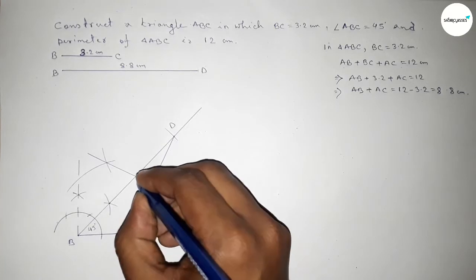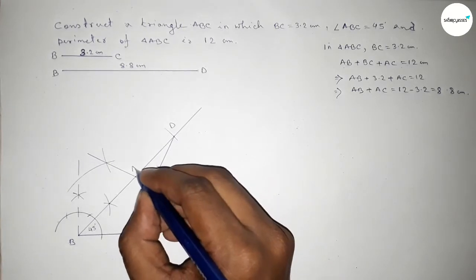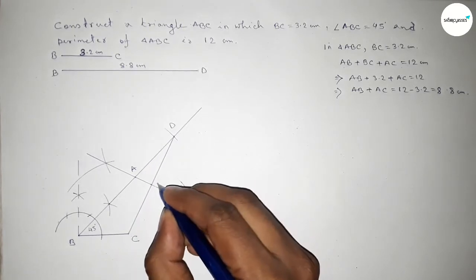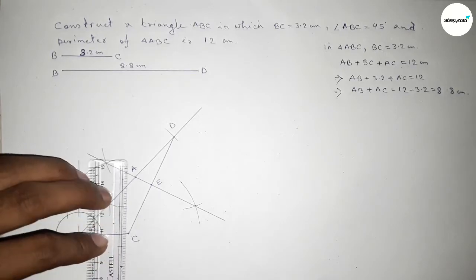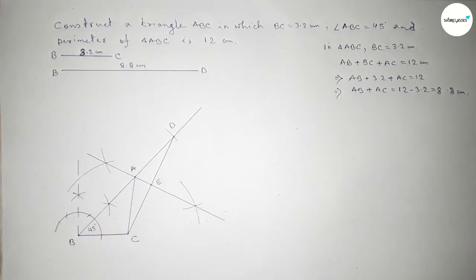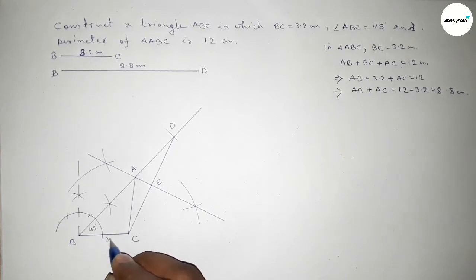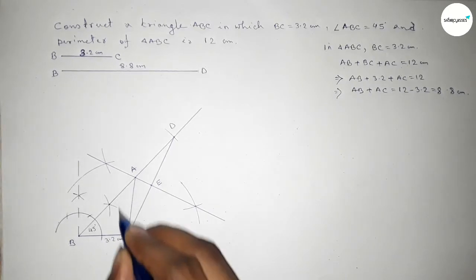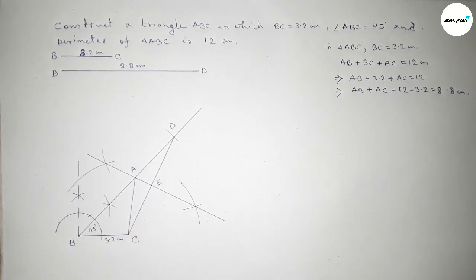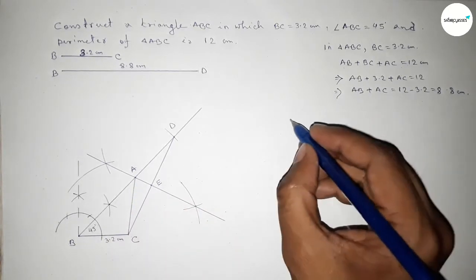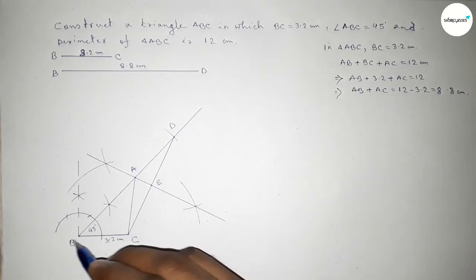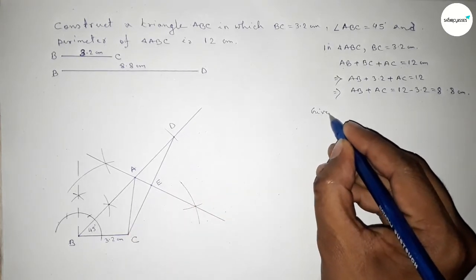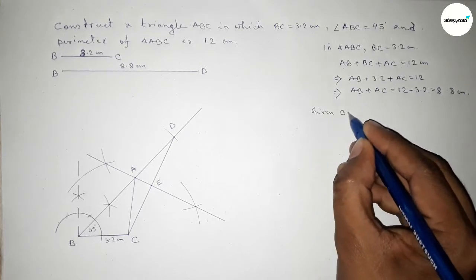The perpendicular bisector intersects at two points. Taking point A where it intersects the BD ray, and point E on the bisector. Now joining A and C, and A and B. With BC equal to 3.2 centimeters, this is the required triangle.